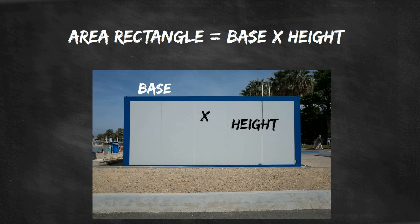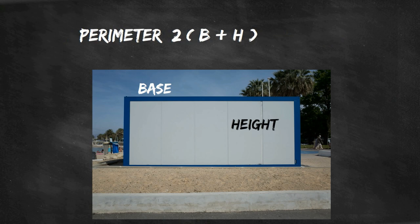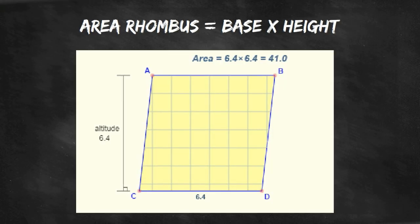The perimeter of a rectangle is 2 times base plus height. You can find the area of a rhombus two ways. If the height is given you can use base times height. Remember it is a line perpendicular to the base.